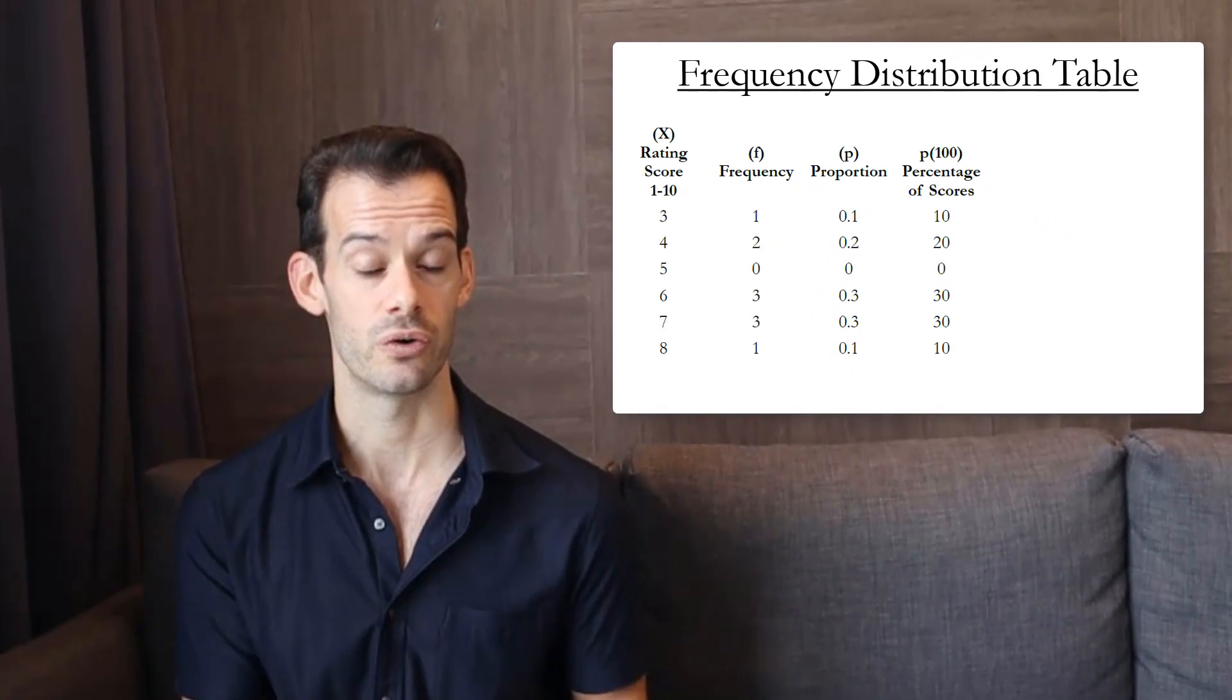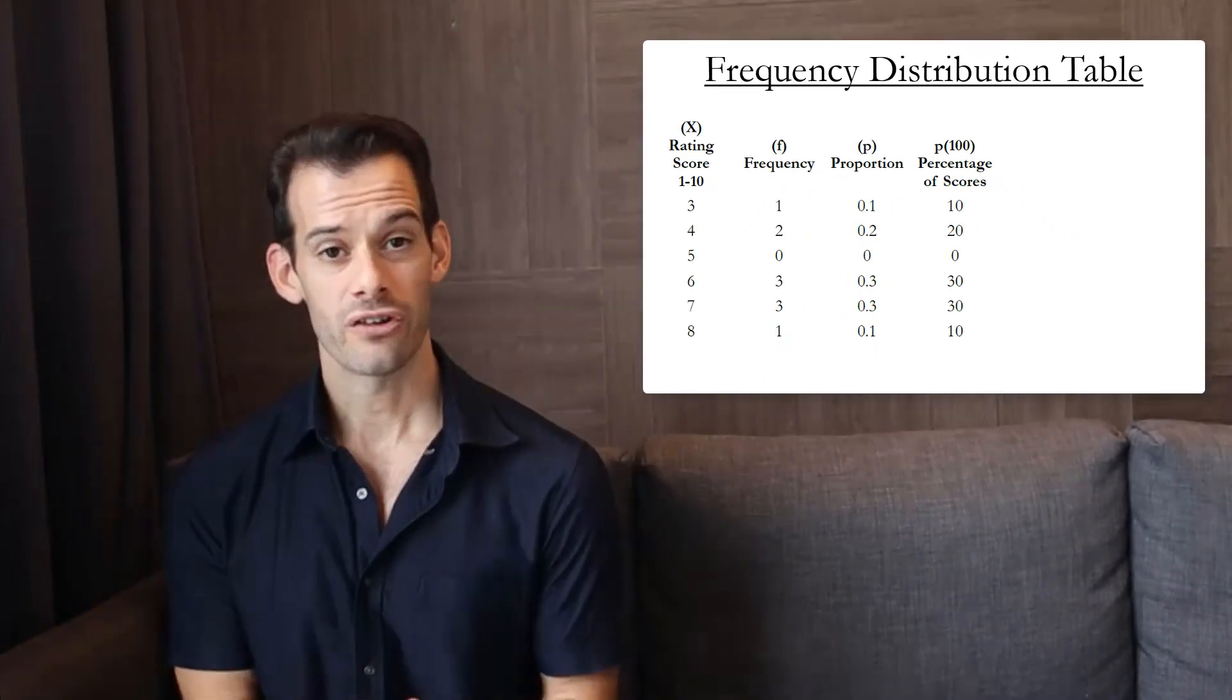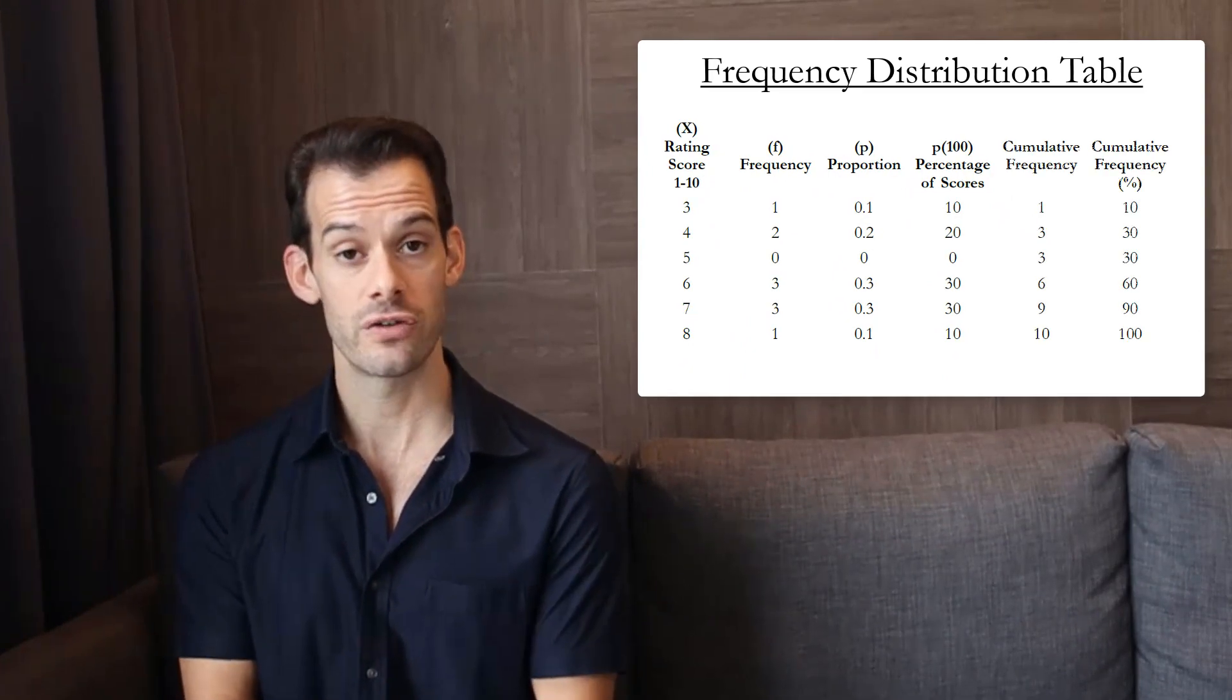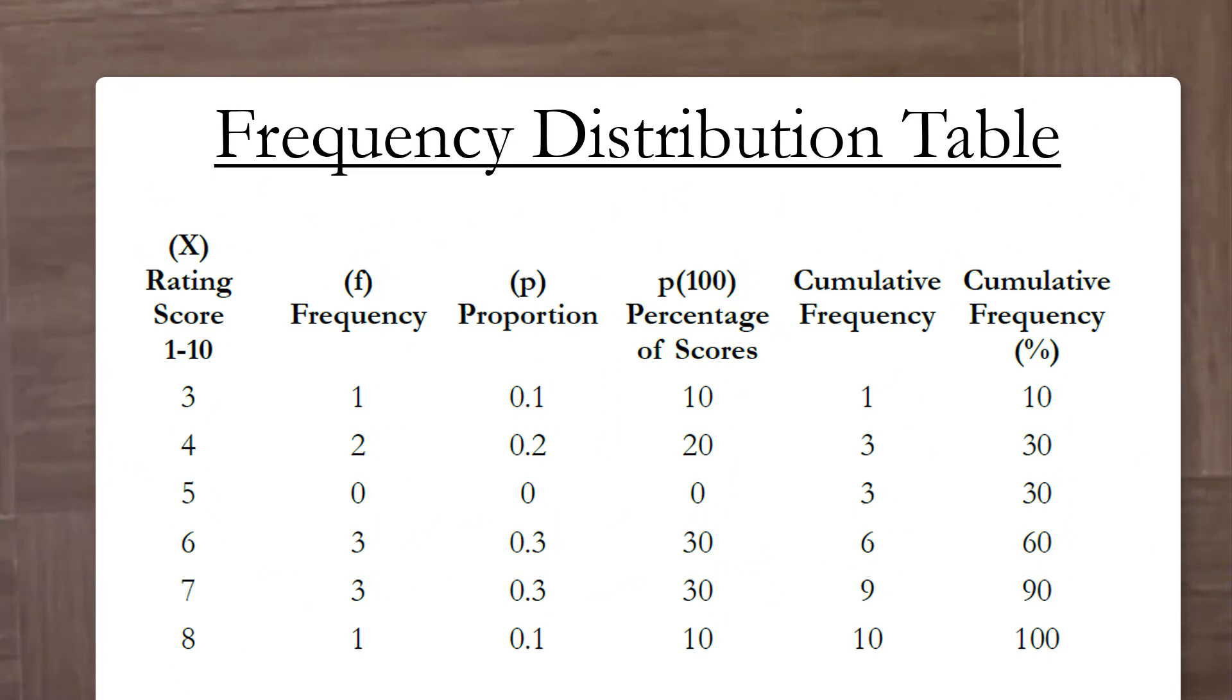We could also have a column that shows the cumulative frequency of scores. And so we could do this either by just summing up the frequency values. And so we can say at this point we have a total of 3 scores, at this point we have a total of 6 scores, etc. Or we could do this by summing the percentages.